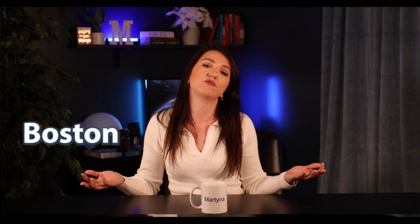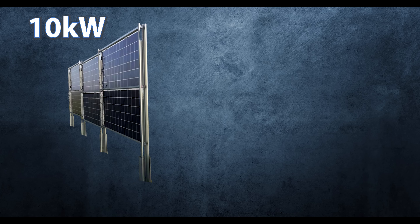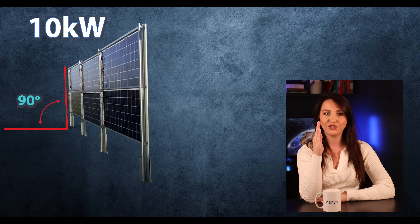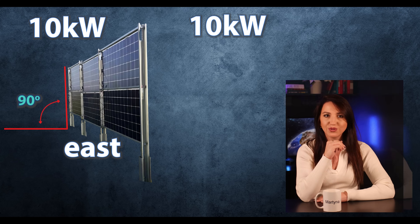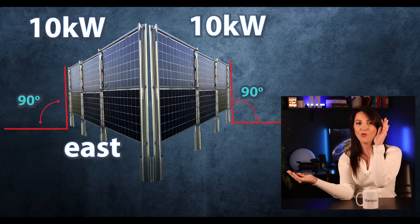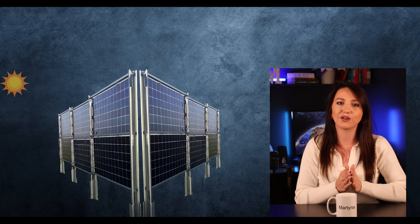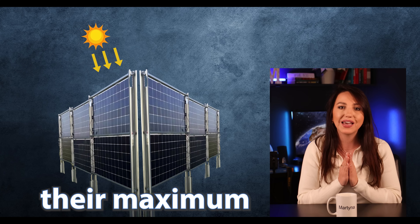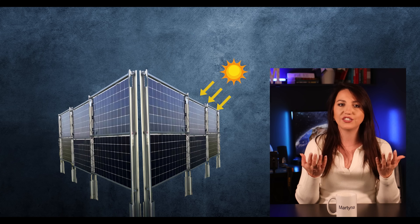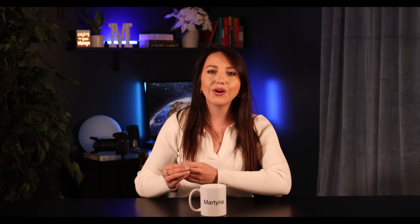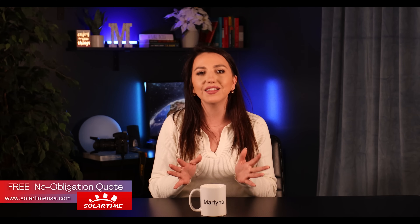Just as Boston differs from Florida, orientation matters enormously. Say you had 10 kilowatts of panels tilted at 90 degrees facing due east, and another 10 kilowatts tilted at 90 degrees facing west — basically mounted perpendicular to the ground. Since these two groups of panels will never be producing their maximum at the same time, you could theoretically connect 20 kilowatts worth of panels to a 10 kilowatt inverter. This is an extreme example, but extreme examples help people understand concepts better.